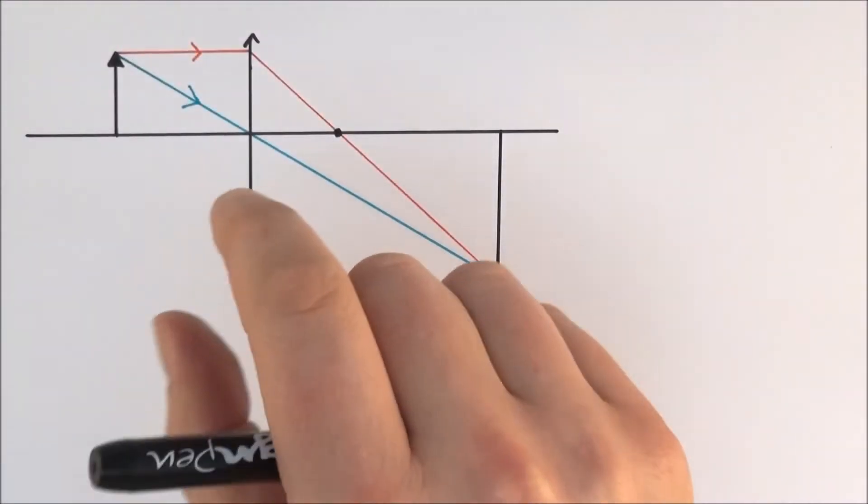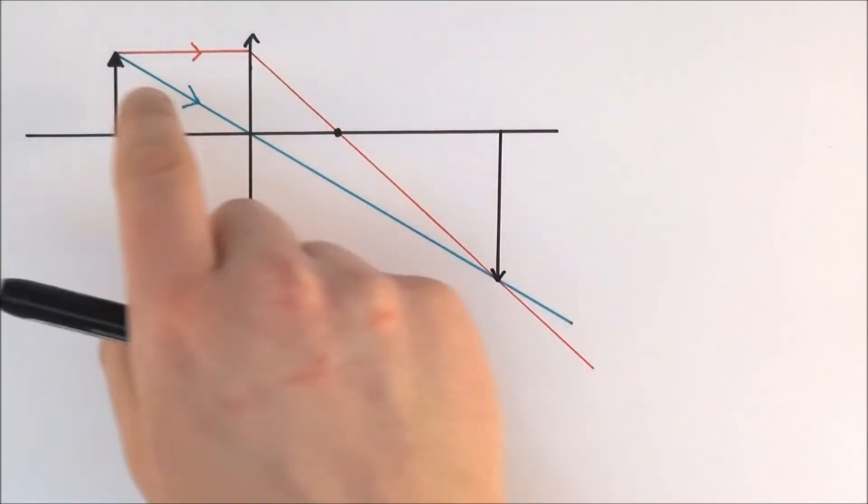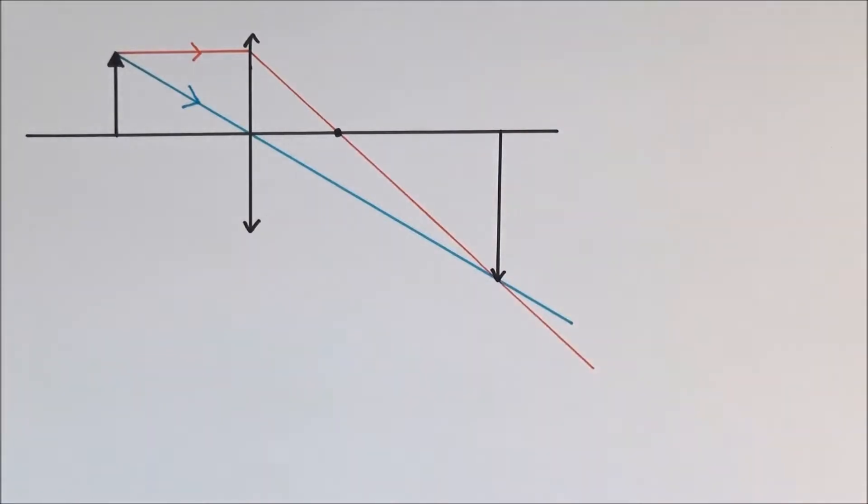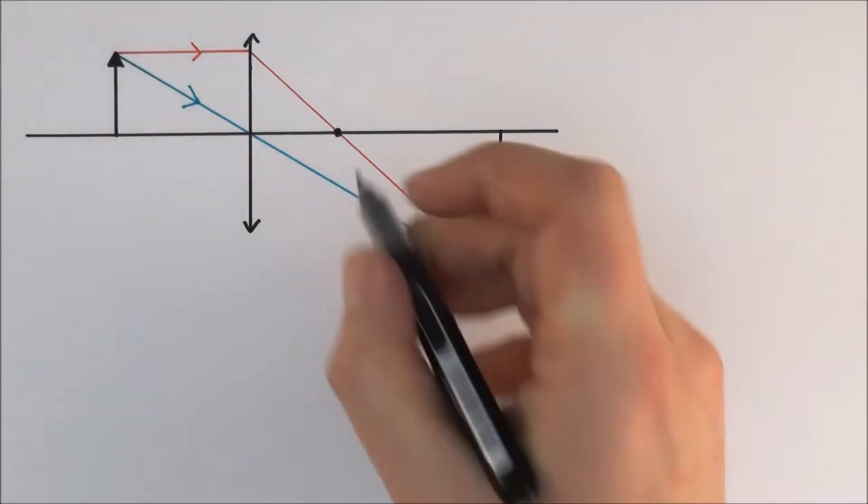This is all about the lens formula. So imagine here we have a converging lens and we've got an object over here which makes an image over here. Now we can label a few things.